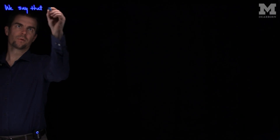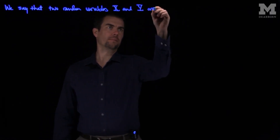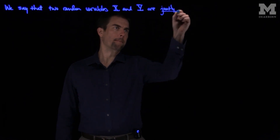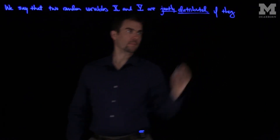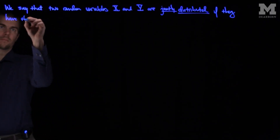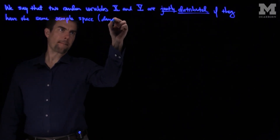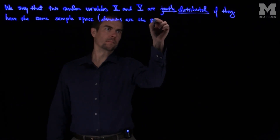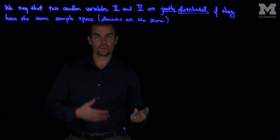Hello students. In this video we'll discuss jointly distributed random variables. We say that two random variables x and y are jointly distributed if they have the same sample space. Of course that means their domains are the same. And if they have the same sample space, I can construct probability density functions, joint probability density functions, and then cumulative joint density functions.